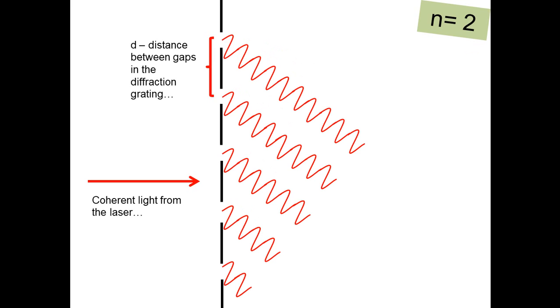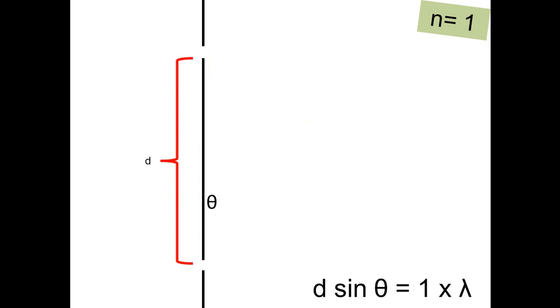This is the second order. So now again the angle's changed, but again there will be constructive interference at the screen with all these rays of light coming towards each other, coming towards the screen, and they'll add up and we'll end up with a bright dot on the screen.